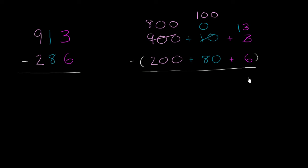13 minus 6 is 7. 100 minus 80 is 20. 800 minus 200 is 600. So we're left with 600 plus 20 plus 7, which is 627.